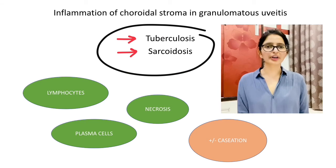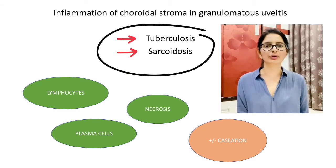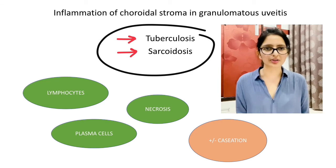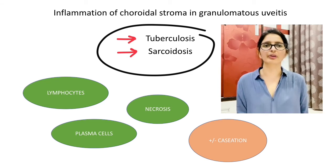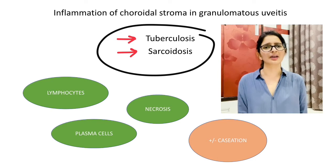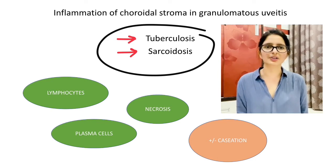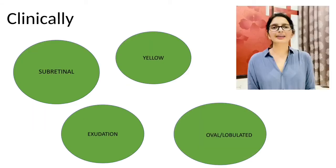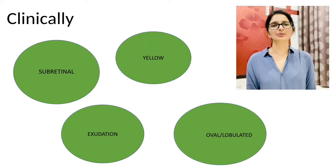Choroidal granulomas are nothing but inflammation of the choroidal stroma which is granulomatous in nature. The lesion usually consists of lymphocytes, plasma cells, and necrosis. It can be caseating in cases of tuberculosis and non-caseating like in sarcoidosis. Typically, choroidal granulomas appear as a sub-retinal lesion which is yellow in color.